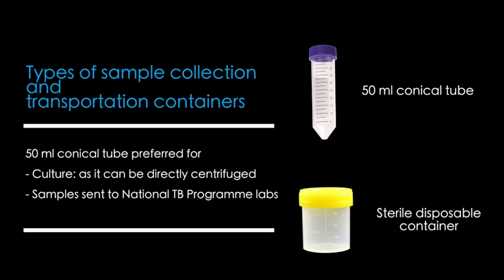If the aspirate is too small, a conical tube can be used for sample transport instead of the disposable container shown in the video. As the conical tube can be placed directly into a centrifuge machine, it is preferred when the sample is to be subjected to mycobacterial culture and drug sensitivity testing. This is also the preferred container for samples being sent to national TB program labs, as it eliminates the need to transfer the specimen from one container to another.